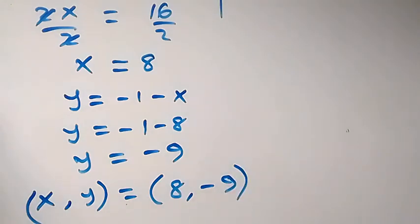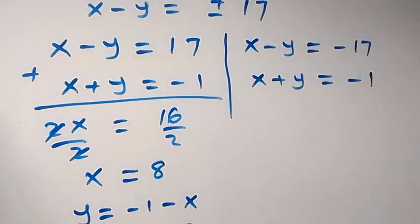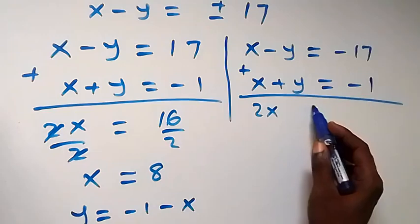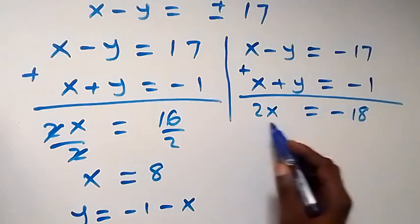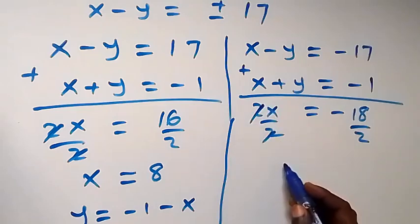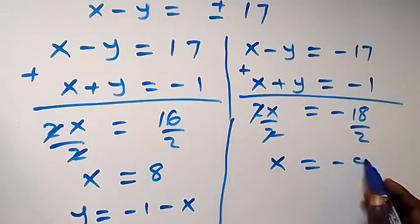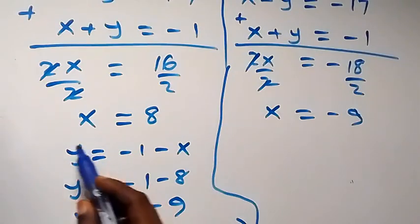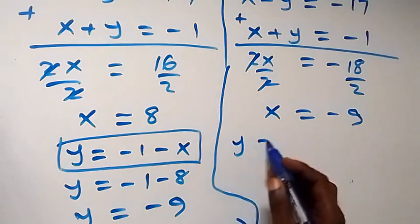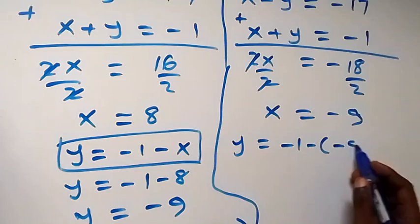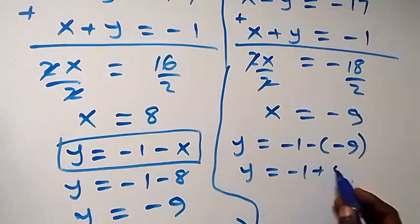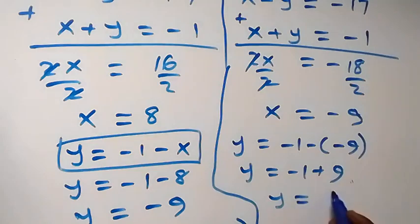For case two (x minus y = minus 17 and x plus y = minus 1): adding gives 2x = minus 18, so x equals minus 9. Substituting into equation three gives y equals minus 1 minus (minus 9), which implies y equals minus 1 plus 9, so y equals 8.